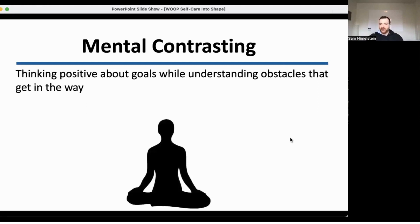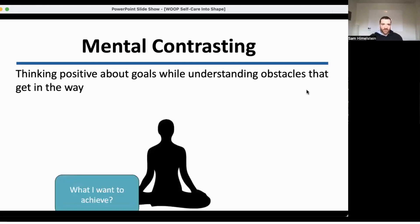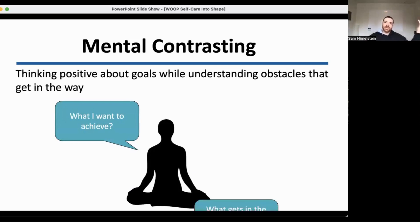It's the idea of we have an individual. They have a goal. What do I want to achieve? Mental contrasting is asking yourself, on the one hand, what do I want to achieve? On the other hand, what's going to get in the way of that? So a lot of people just think about what do I want to achieve. I want to meditate for three minutes every single day. That's our goal.